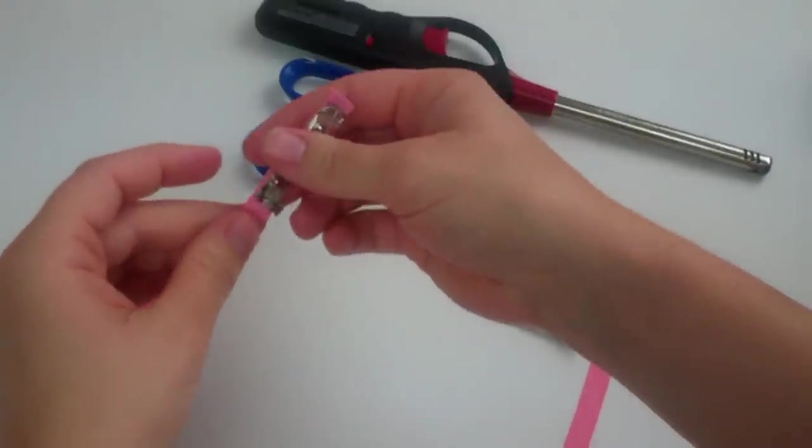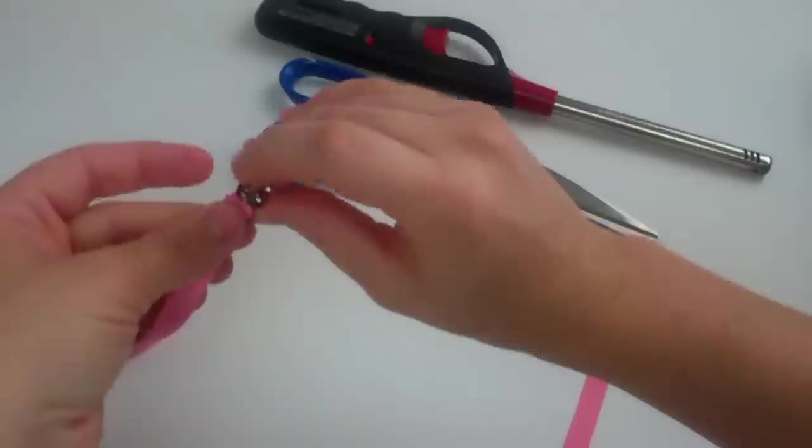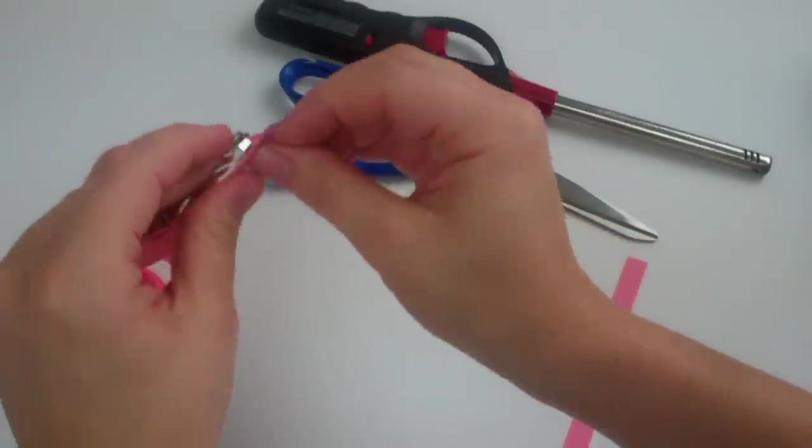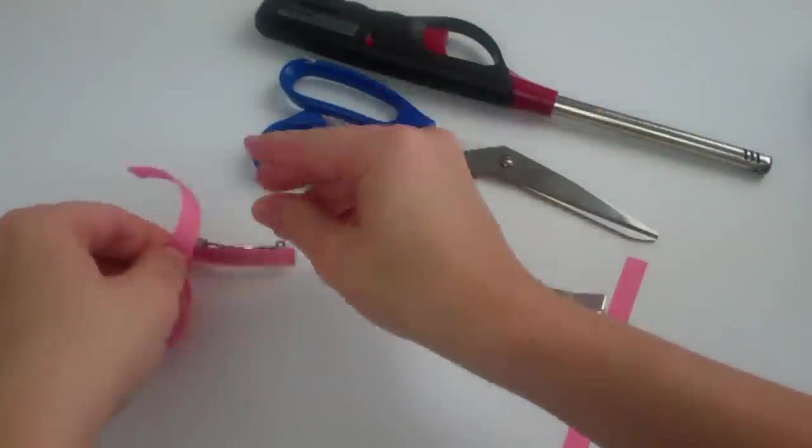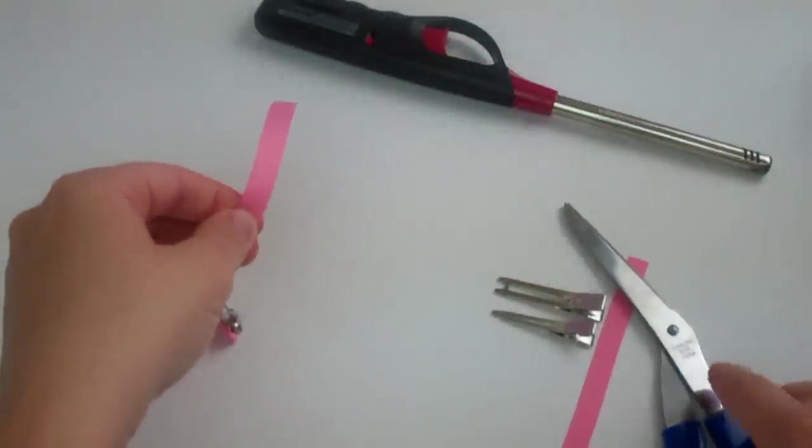I just take my ribbon, go right here, and then I go over. So I go like that, go over, go like that. So that's how much I need. Go ahead and give it a cut.